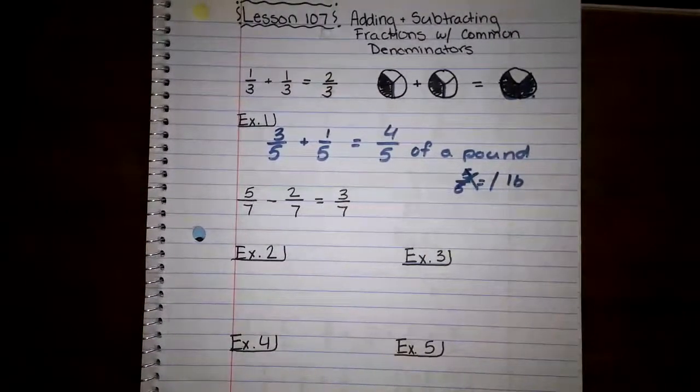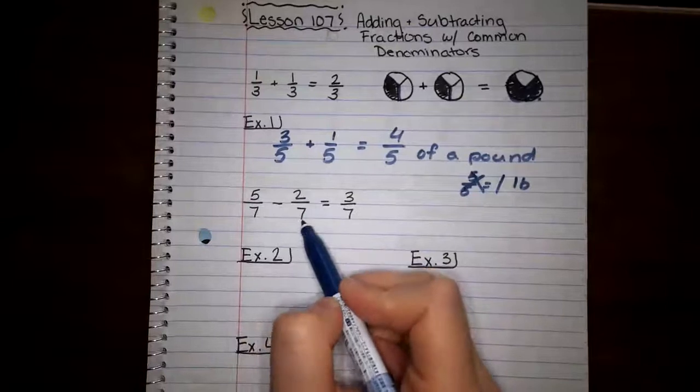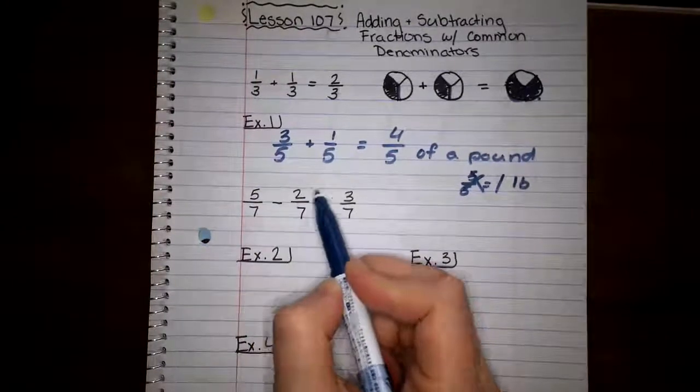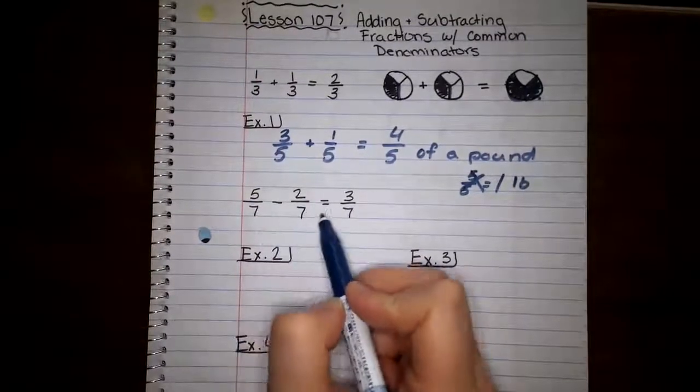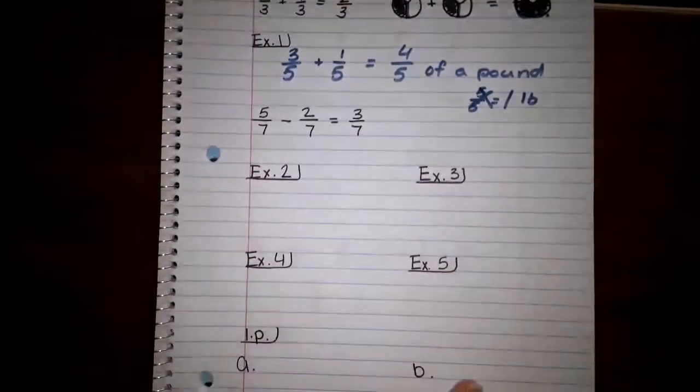Alright. Now that's adding fractions. It's pretty simple. So the same happens when we subtract fractions. We subtract only the numerators. The denominator does not change. So if I have five sevenths and I'm subtracting two sevenths, five minus two gives me three. My denominator does not change. It stays seven. So three sevenths.